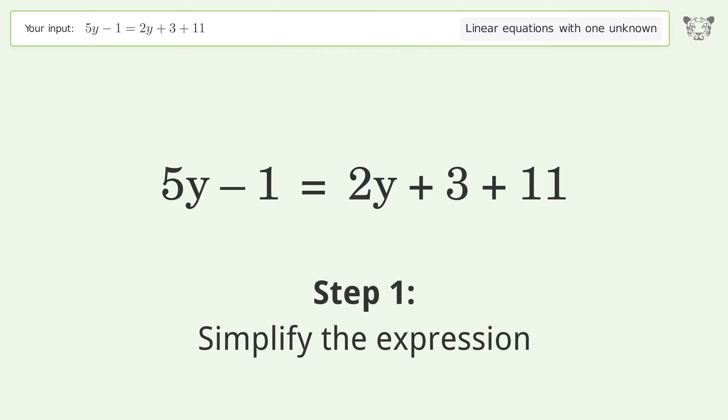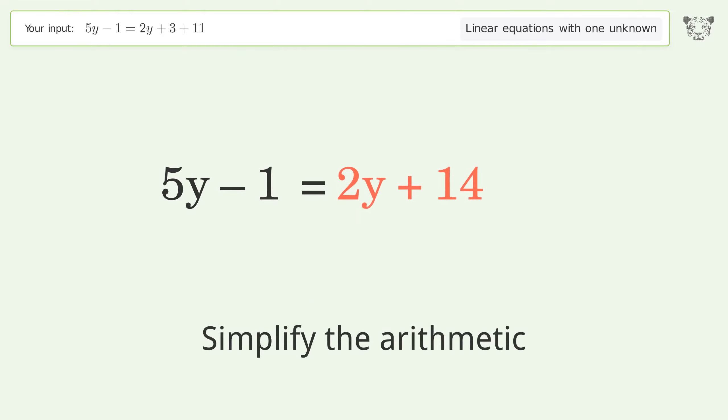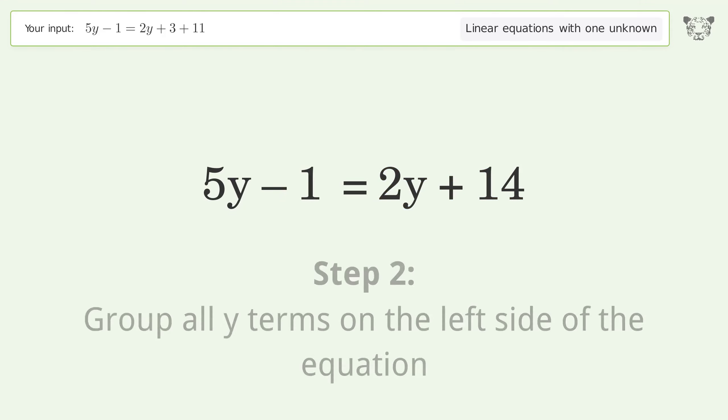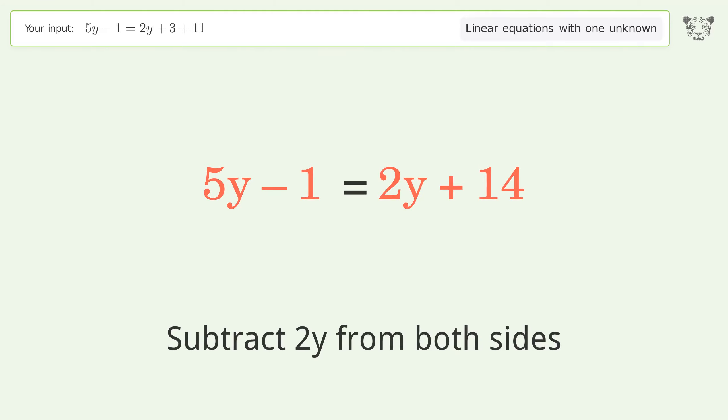Simplify the expression. Simplify the arithmetic. Group all y terms on the left side of the equation. Subtract 2y from both sides.